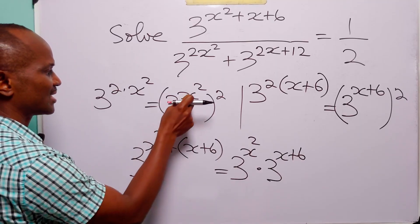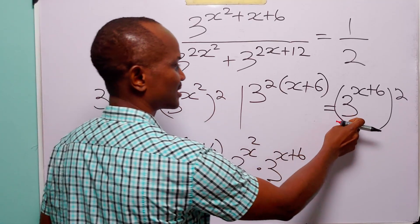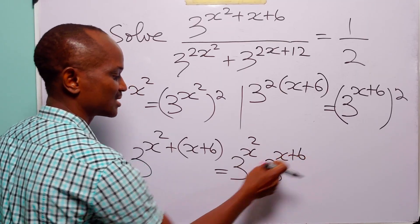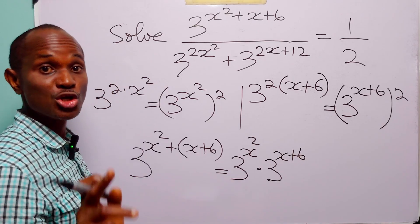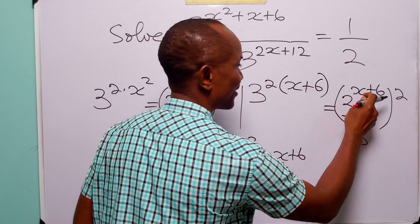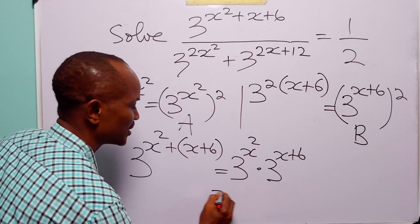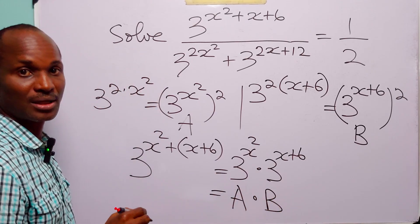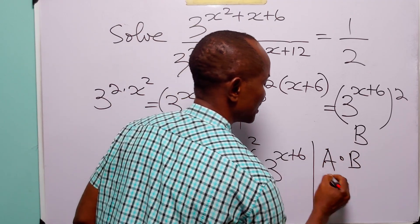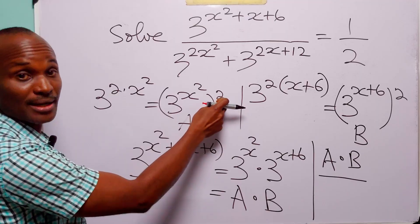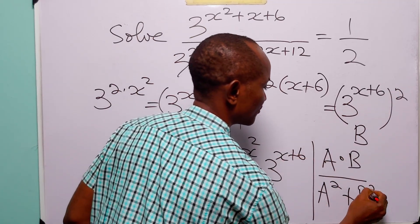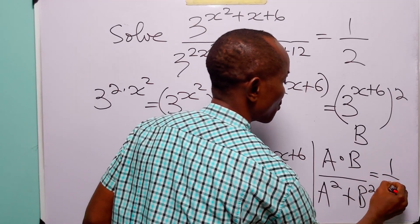Now notice that here we have 3 to the power x squared, squared; here we have 3 to the power x plus 6, squared; and here we have 3 to the power x squared multiplied by 3 to the power x plus 6. So if we call 3 to the power x squared 'a', and 3 to the power x plus 6 'b', then this becomes a times b. And the left-hand side of this equation is going to be a times b divided by a squared plus b squared, equal to 1 over 2.